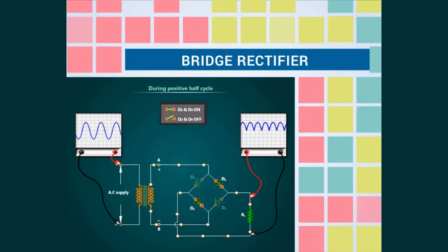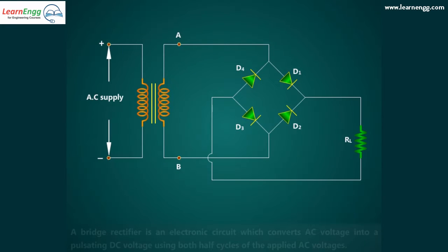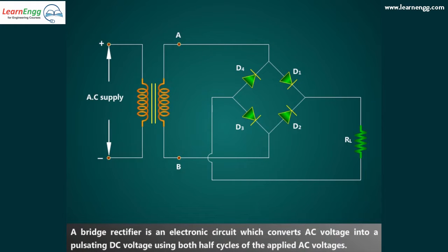Bridge Rectifier. In this video we are going to see about the construction and working of bridge rectifier. A bridge rectifier is an electronic circuit which converts AC voltage into a pulsating DC voltage using both half cycles of the applied AC voltage.